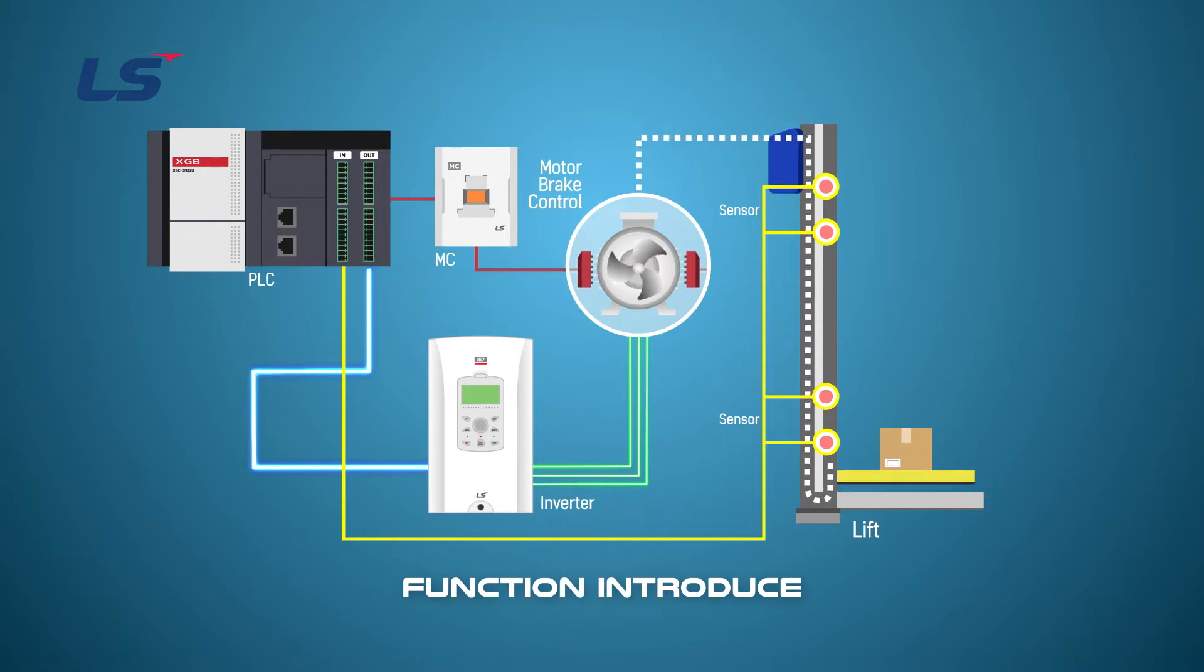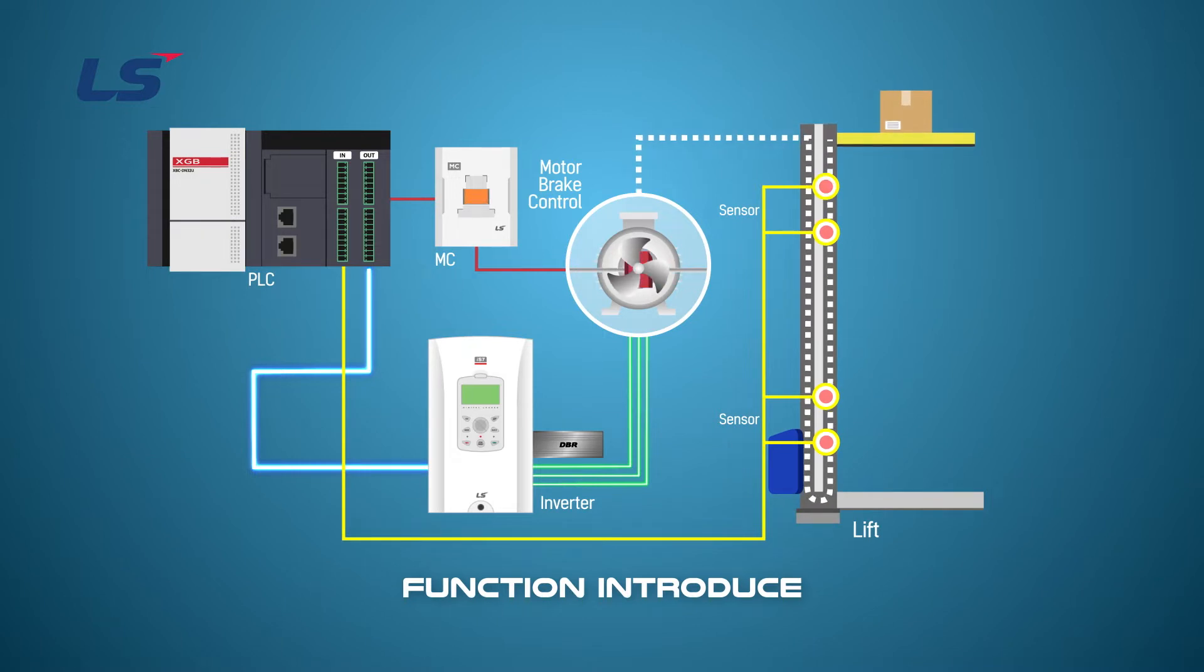In addition, a braking resistor is required to prevent over-voltage trips that occur during operation. In this video, we will set up the PLC to replace the inverter of the lift, which is the upper controller.